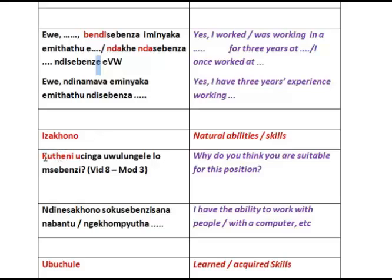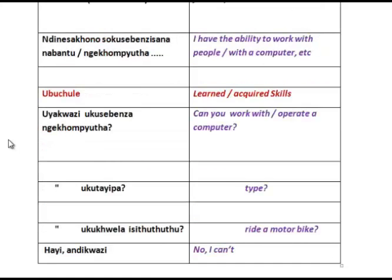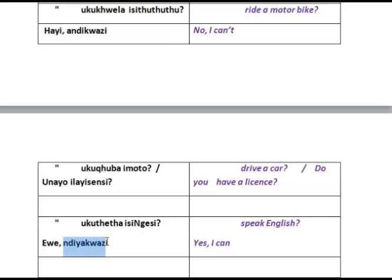Then we look at natural abilities and the question 'Kuteni' — asking why. The use of the little word 'kuteni' does affect the verb in some instances, and this will be explained in video 8 of module 3. 'Dinesa kono' — I have the ability; 'sebenzi sana namandu' — of working with people. This is natural talent as opposed to acquired skill. A useful question: 'We are kwasi' — are you able to? 'Andikwazi' — I can't. And the positive response: 'diakwazi' — I can.